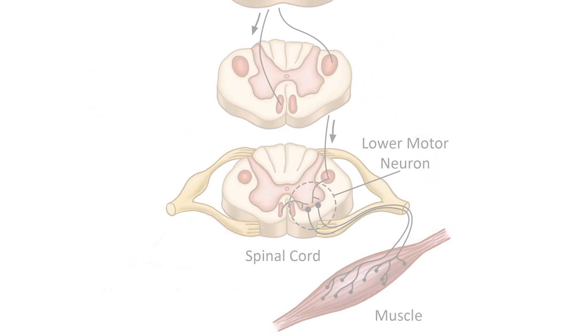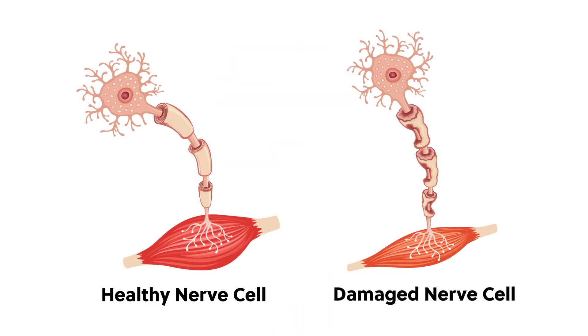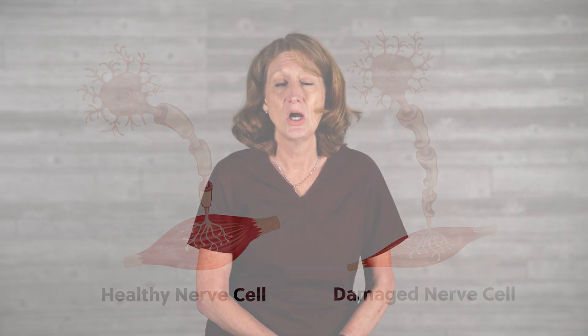With ALS, the cell bodies begin to die and the axon and myelin sheaths begin to degenerate and scar so that impulses cannot be transmitted, resulting in muscle atrophy. ALS destroys both upper and lower motor neurons. While ALS typically begins in one part of the body, it spreads to encompass the entire motor system, resulting in increasing weakness and paralysis of all voluntary muscles, and eventually includes those muscles required for talking, eating, and breathing.